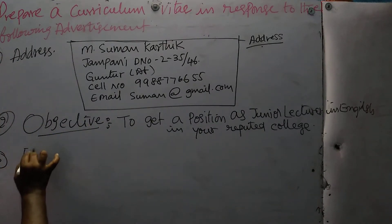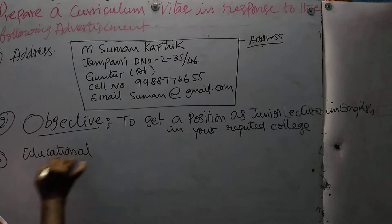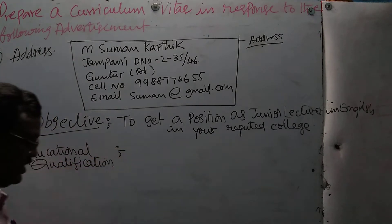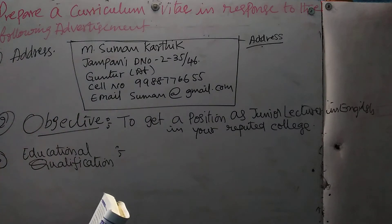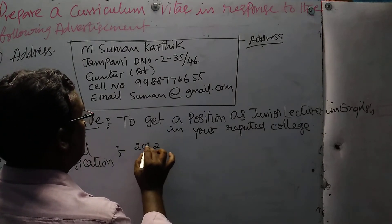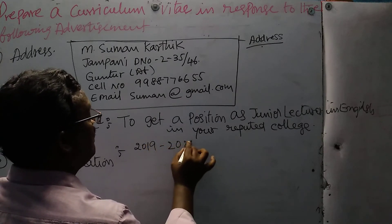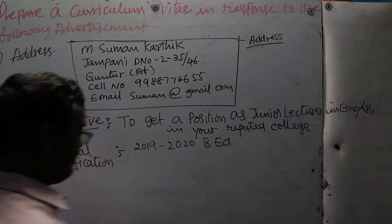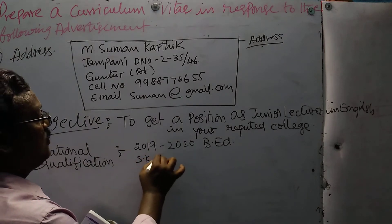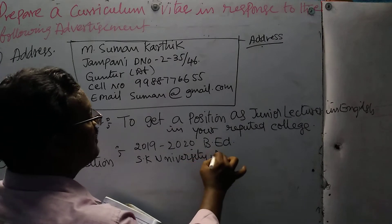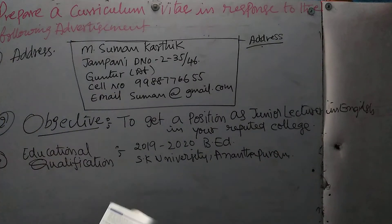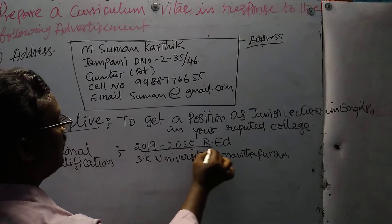Educational qualification. Recent information you have to write first. For example, he finished B.Ed. first. For example, 2019 to 2020 — year — B.Ed. he completed. From which university he completed B.Ed.: SK University, Anantapuram. This is the information about B.Ed.